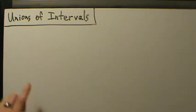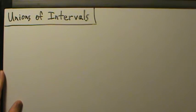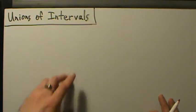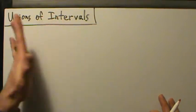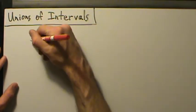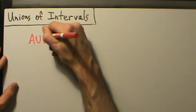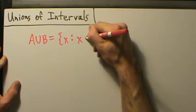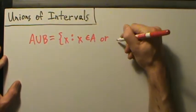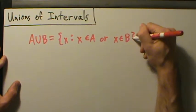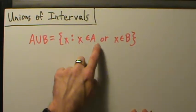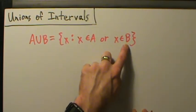In this video we're going to start talking about unions of intervals. We talked about unions of sets in general in an earlier video. Remember, an interval is just a special kind of set — a subset of the real numbers. So let's recall the definition of union: A union B is the set of all x such that x is an element of A or x is an element of B, or both.